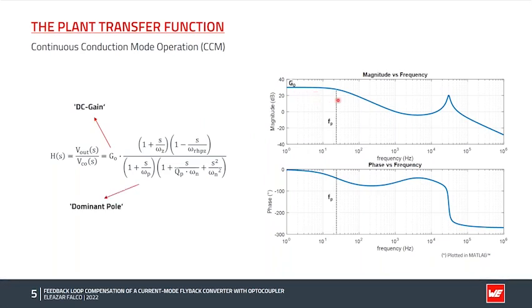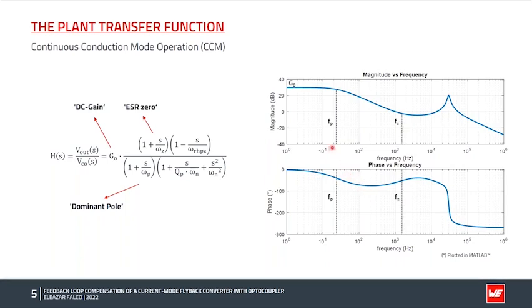Then we have a dominant pole which dominates the response in the lower frequency range. The pole causes the magnitude to roll off at minus 20 dB per decade and causes phase lag starting about one decade before the pole frequency, reaching up to minus 90 degrees after the pole frequency. In this case it does not quite reach minus 90 degrees because we also have the so-called ESR zero.